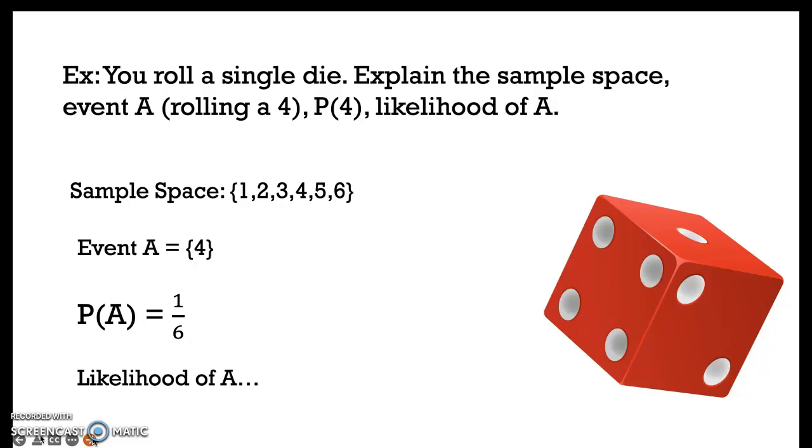It's equally likely to roll a 5 or a 6 because the probability of rolling any single number has the same theoretical probability if you are rolling a fair die and not something that's weighted. So that's some probability terminology.